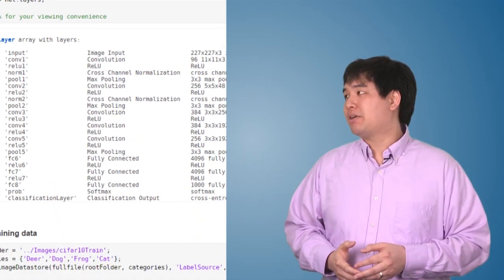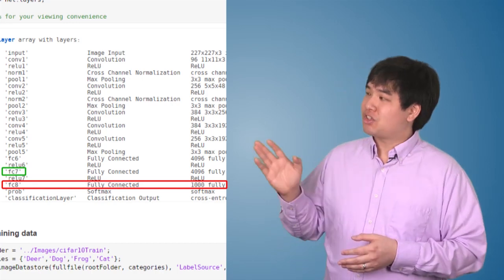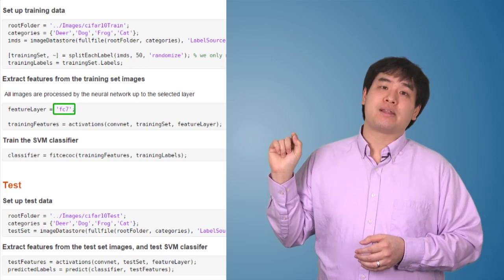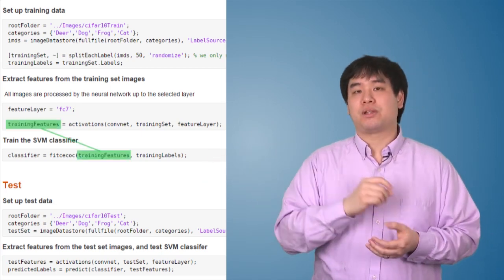Generally, the deepest layer of the network right before the layer that actually starts classifying things is a good place to start for feature extraction. So this single line of code extracts the features from that layer, and now we can give it to our machine learning classifier as a starting point.